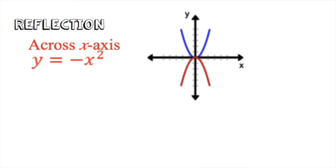Reflection is straightforward: if you see a negative in front of the parentheses in vertex form, or a negative in front of x² in your quadratic equation, you just flip the entire quadratic over the x-axis. The x-axis becomes your line of symmetry — you're just flipping it over. This one is probably the easiest transformation.